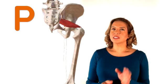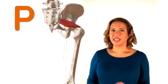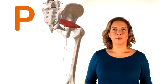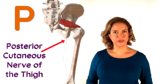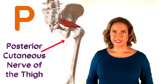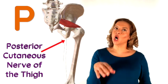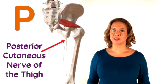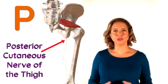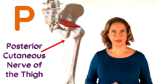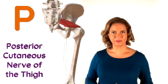Let's get back to the mnemonic. We got to the second P, which is for the posterior cutaneous nerve of the thigh. This is a long nerve that goes on to provide sensation to the buttock region and also the skin on the back of the thigh.